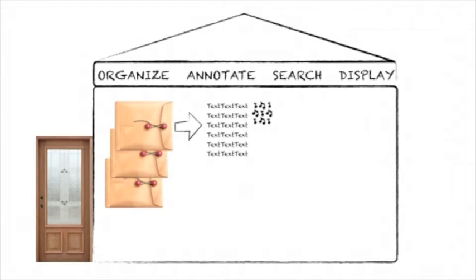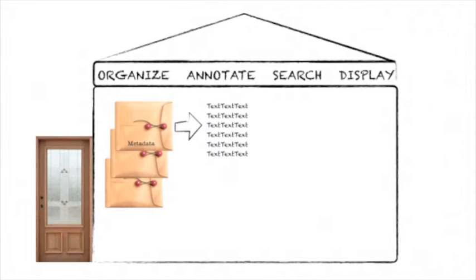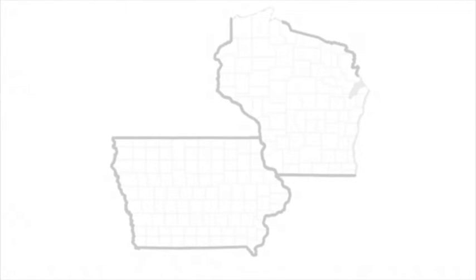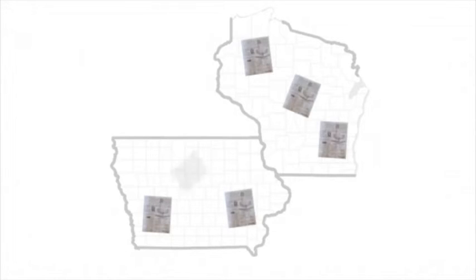Typically, you can add additional information to the envelope. For example, if you have newspaper articles, you can attach the location of the newspaper, the publication date, or the name of the author to the envelope. This will help you later when you want to look at specific parts of your data — for example, only at news articles from Wisconsin, as opposed to news articles from Iowa.